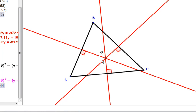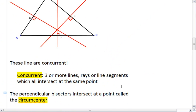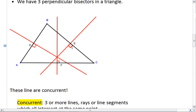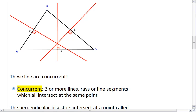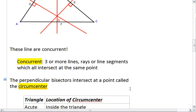This is a very special point, and this is called the circumcenter. So when three or more lines, rays, or line segments all meet at one point, they're called concurrent. The perpendicular bisectors of a triangle are concurrent, and the place where they meet is called the circumcenter.